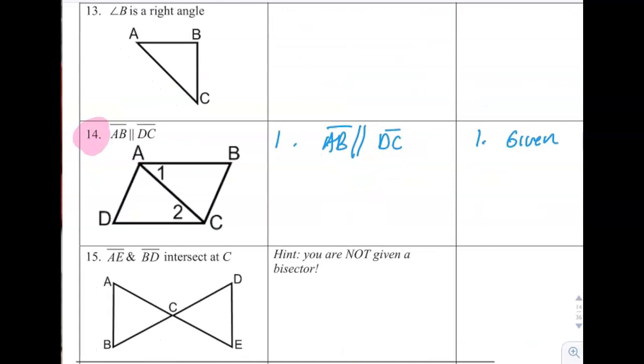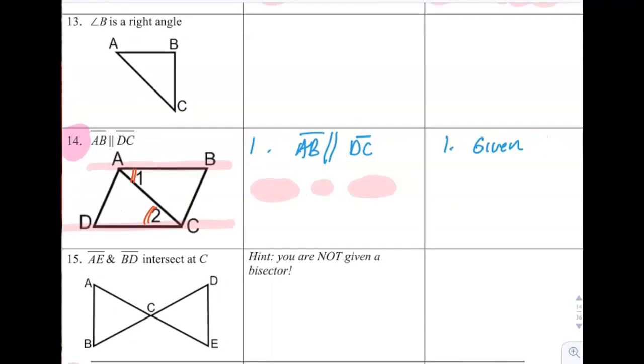Number 14. It gives you what appears to be a parallelogram. It tells you that AB is parallel to DC. If AB is parallel to DC, then you can say angle 1 must be congruent to angle 2 because parallel lines imply congruent alternate interior angles.